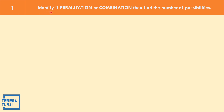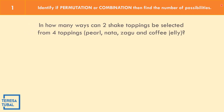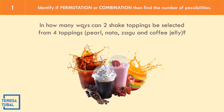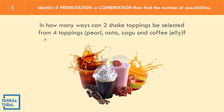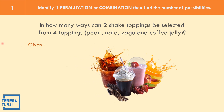Let us identify whether it is permutation or combination and then find the number of possibilities. In example number one: in how many ways can two shake toppings be selected from four toppings — pearl, nata, sago, coffee jelly? The given: N equals four because we have four toppings, and R equals two because we need to select two shake toppings.